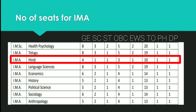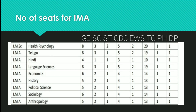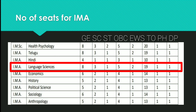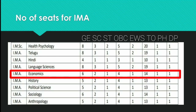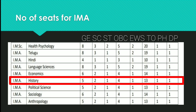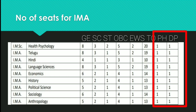For Economics: General 6, SC 2, ST 1, OBC 6, EWS 1, Total 14, PH 1, Defense 1. For Language Sciences: General 8, SC 3, ST 1, OBC 5, EWS 2, Total 19, PH 1, Defense 1. For History: General 5, SC 2, ST 1, OBC 4, EWS 1, Total 13. Generally, PH and Defense carry equally 1 seat for every stream, as it is 5% for both categories.